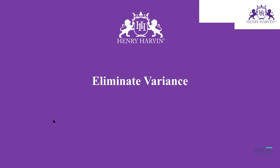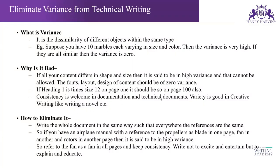Continuing from grammar rules, one more rule in technical writing is that you have to remove variance. When writing technical content, we should have minimum inconsistency — meaning we should maintain consistency throughout the document in terms of formatting, style, and font size. Everything should be consistent; only then can we say our write-up is zero variance.